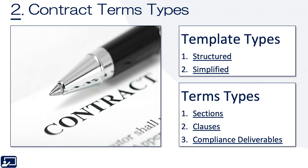Contract terms types. Let's talk quickly about two terms. We have the template types — remember, structured or simplified, we just talked about those — and you have the different types of terms. Sections beget clauses, and clauses beget compliance deliverables.